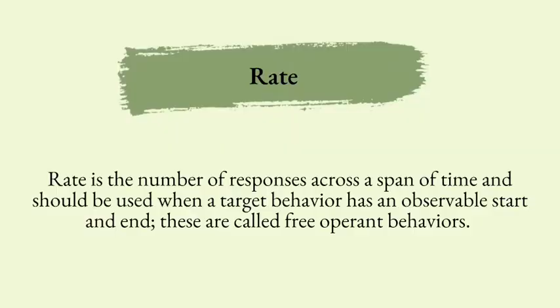Rate is the number of responses across a span of time, and it should be used when the target behavior has an observed start and end — these are called free operant behaviors. You wouldn't use rate for behaviors that can last for long amounts of time; we'll discuss duration and temporal extent measures in a future video. Rate is also not used when behavior is only occurring in restricted settings. Typically, rate is disclosed as responses per minute, hour, or day.